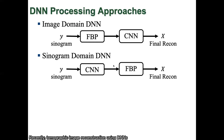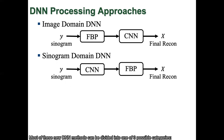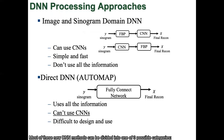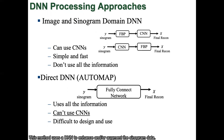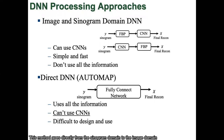Recently, tomographic image reconstruction using deep neural networks has emerged as a fundamentally new approach. Most of these new deep neural network methods can be divided into one of three possible categories: image domain deep neural network, which uses a deep neural network to post-process the analytical reconstruction; sinogram domain deep neural network, which uses a deep neural network to enhance and/or augment the sinogram data; and direct deep neural network, which goes directly from the sinogram domain to the image domain without analytical reconstruction.